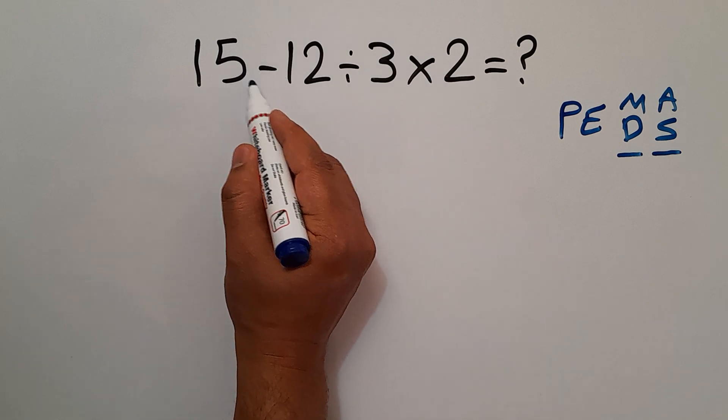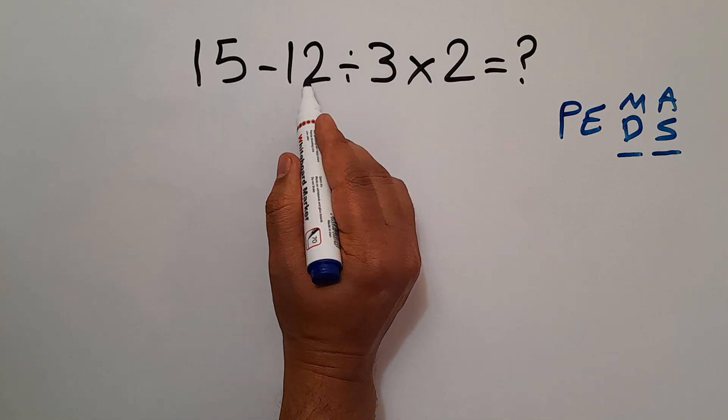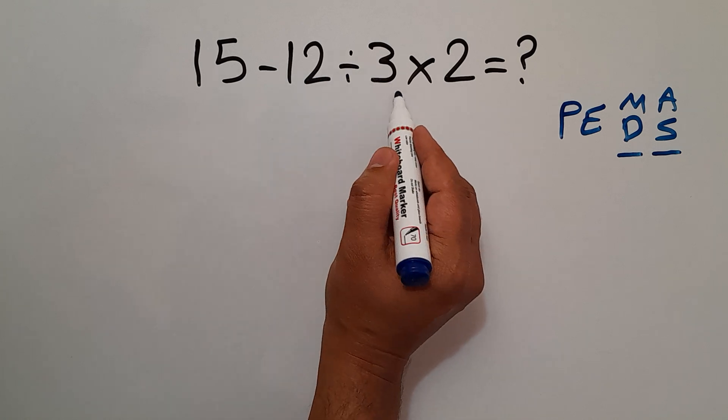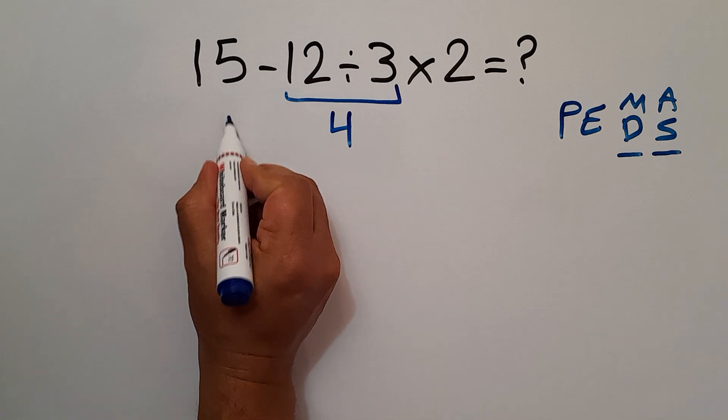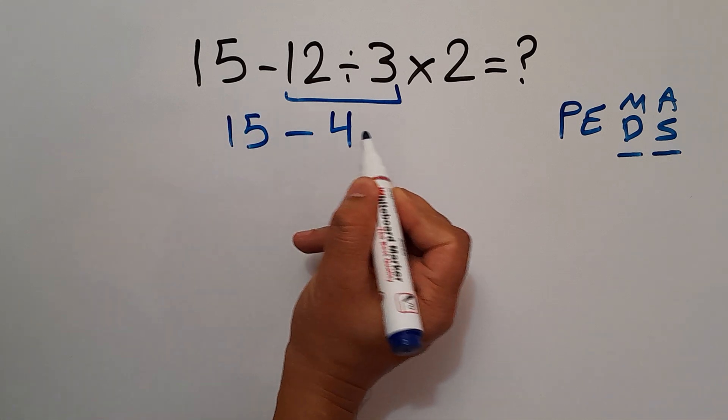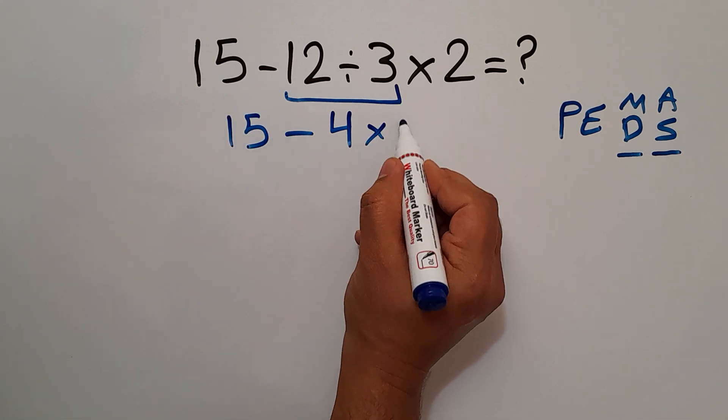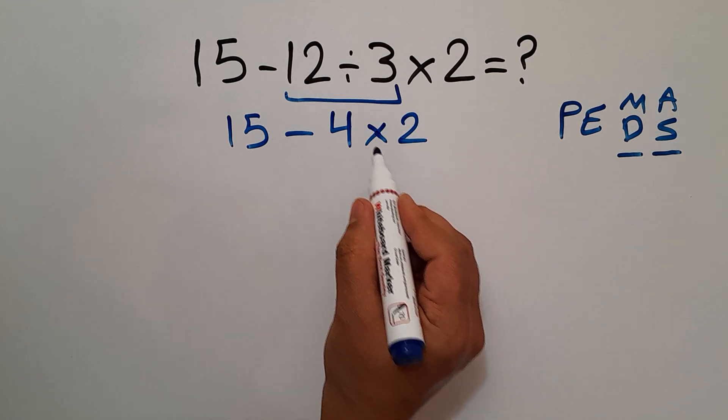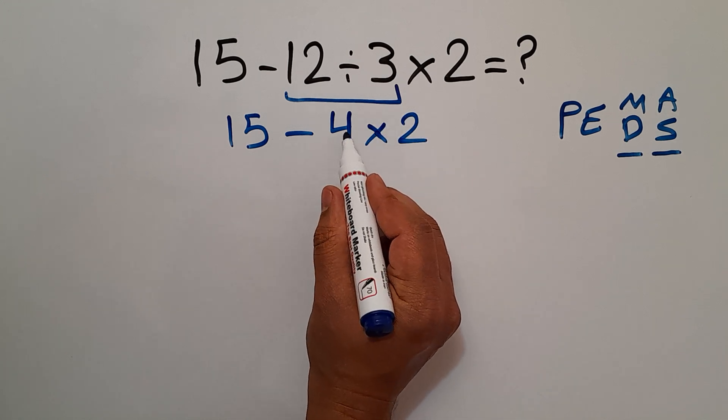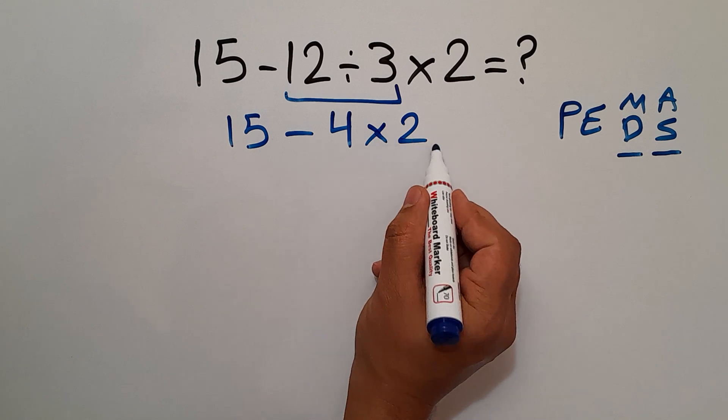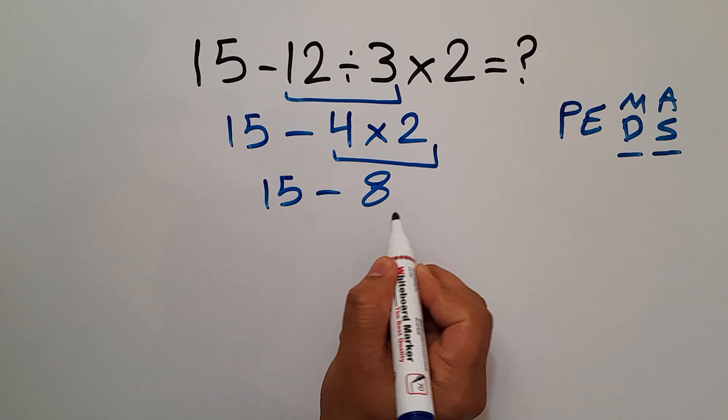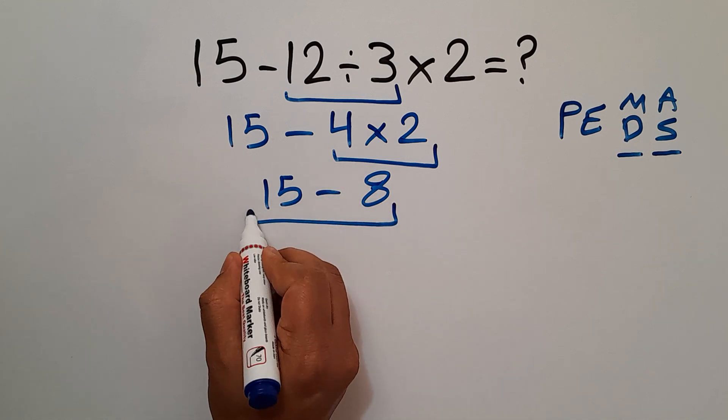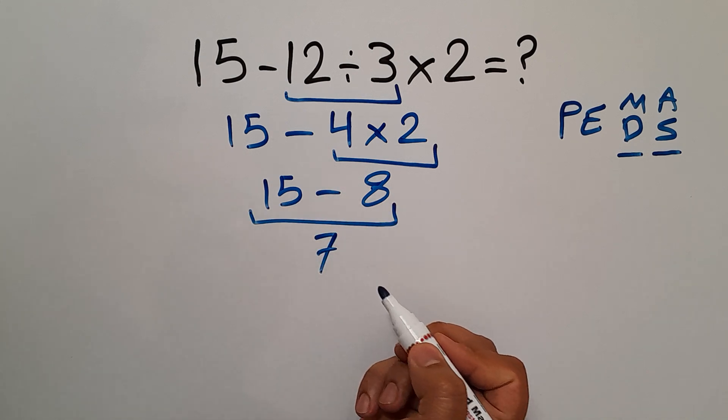Okay, so 12 divided by 3, which equals 4. So we have 15 minus 4 then times 2. Now this multiplication: 4 times 2 equals 8. So we have 15 minus 8, which equals 7.